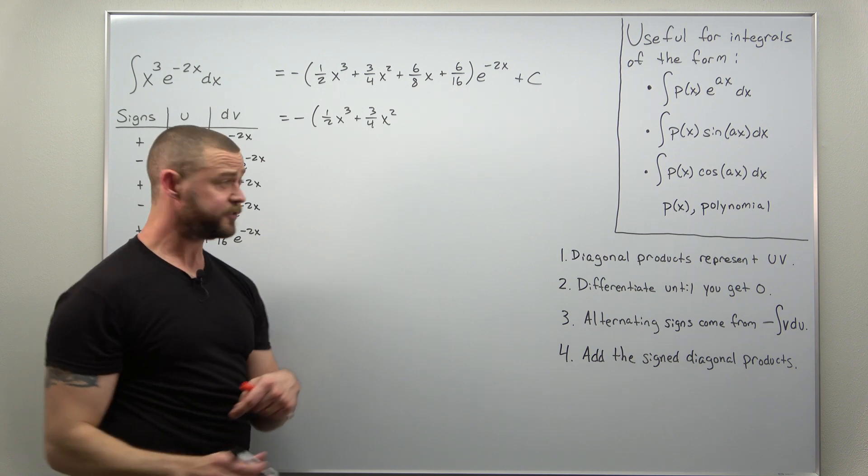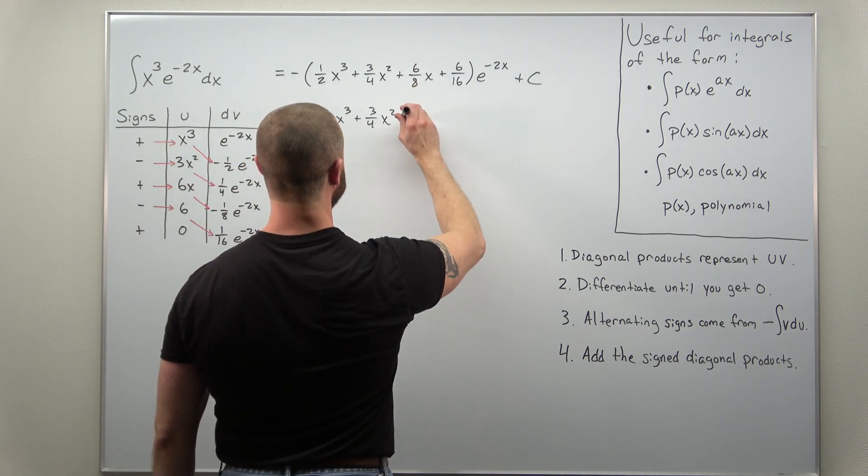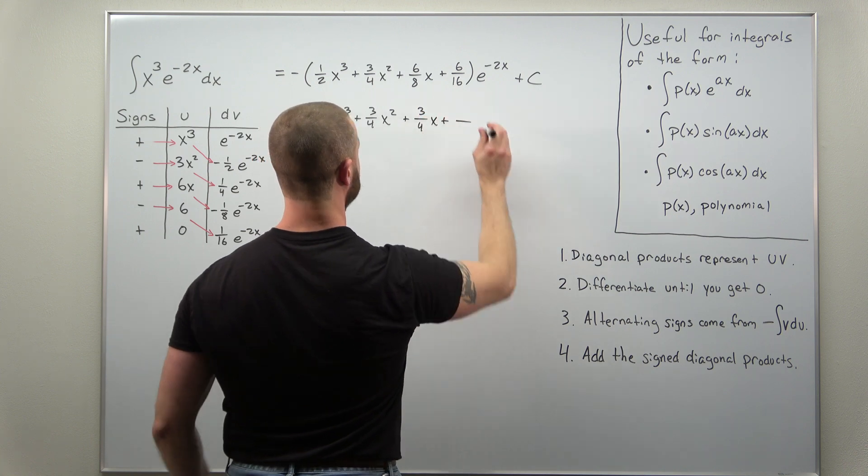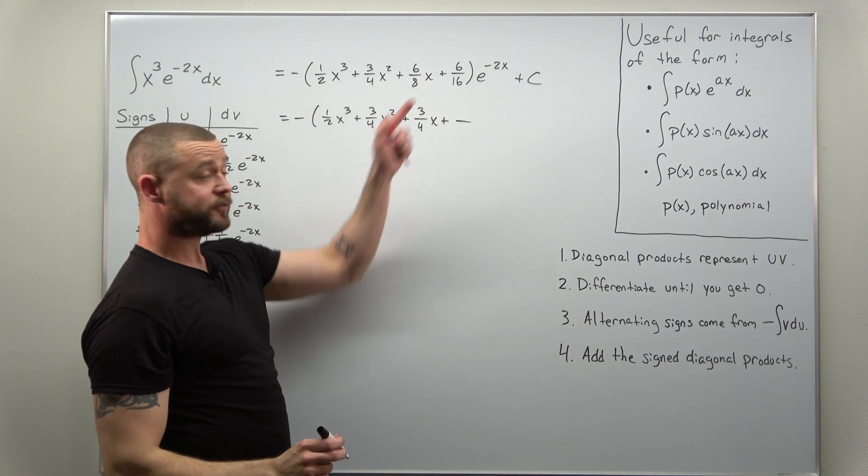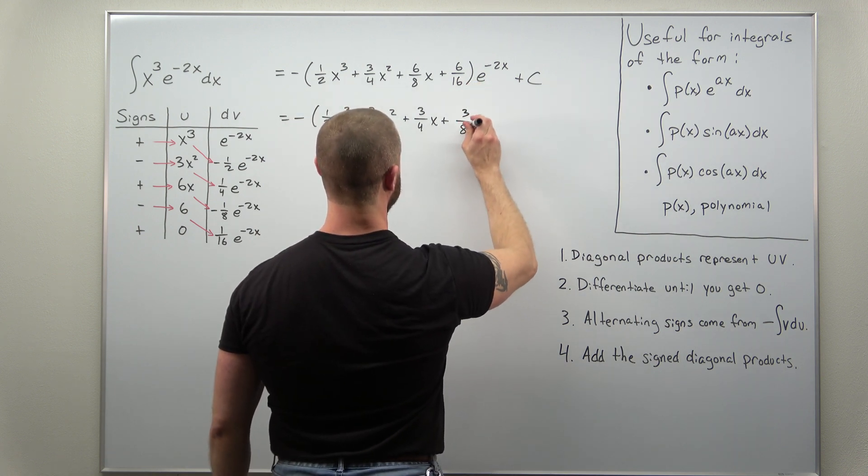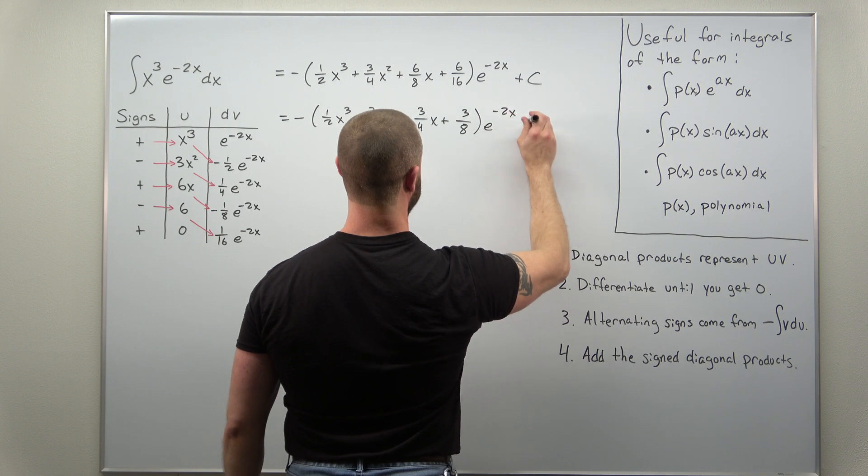Looks like common factors of 2. Looks like you can write that as plus 3 over 4x. And if you cancel out a factor of 2 in the last fraction, looks like you can write that as 3 over 8 times e to the negative 2x.